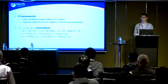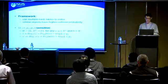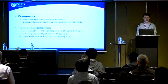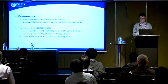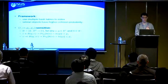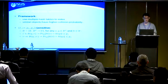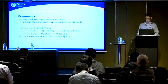LSH is a framework that uses multiple hash tables for indexing. Its insight is that similar objects will have a higher collision probability. This is done by an (R, CR, P1, P2)-sensitive hashing function, usually implemented via random projection. If two points are within distance R, the collision probability is larger than P1; if the distance is larger than CR, the collision probability is smaller than P2. Combining these hashing functions with appropriate strategies gives a sub-linear approach.